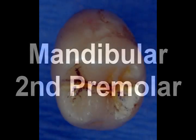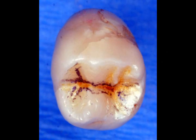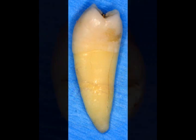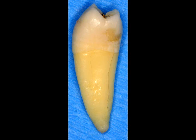Let's now take a look at the mandibular second premolar. When looking at the occlusal outline of a mandibular second premolar, you're going to notice that the outline is round or square. When looking at an interproximal view, you're going to notice that the buccal is curved and the lingual is straight. You'll also notice that the buccal and the lingual cusp are about the same height.